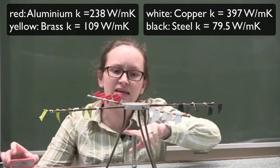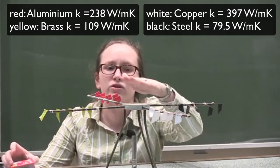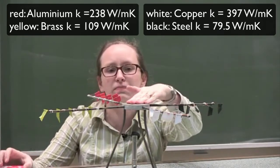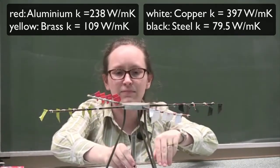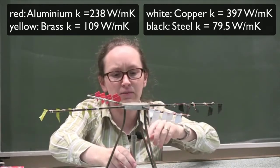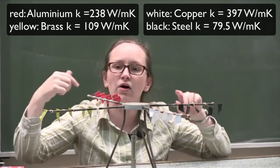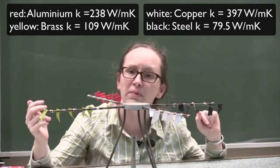Now what I'm going to do in a minute is light this Bunsen burner which will provide heat to this metal plate which will be conducted along each of these different metal arms. Now what I want you to think about is on which of these arms are the flags going to drop off first.